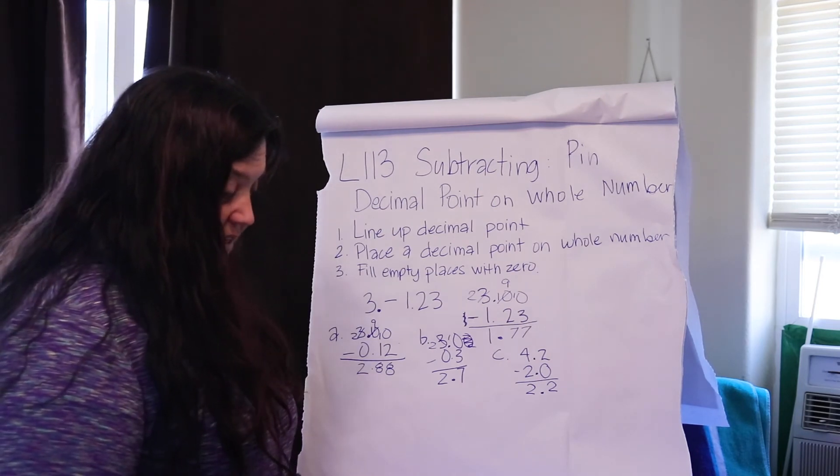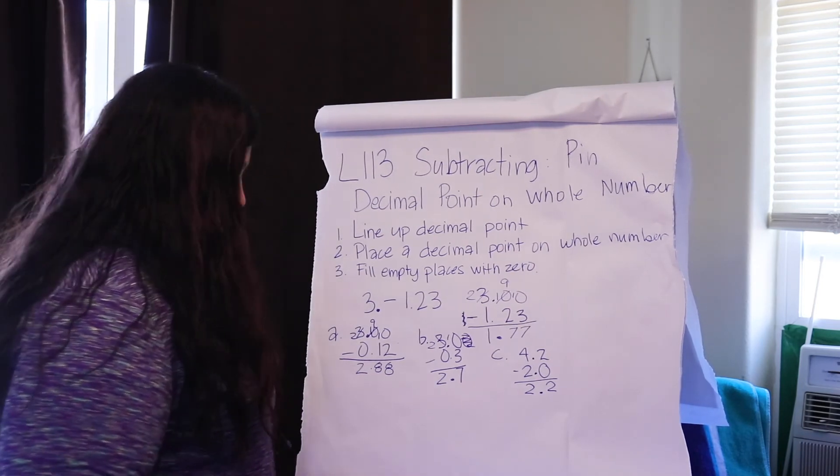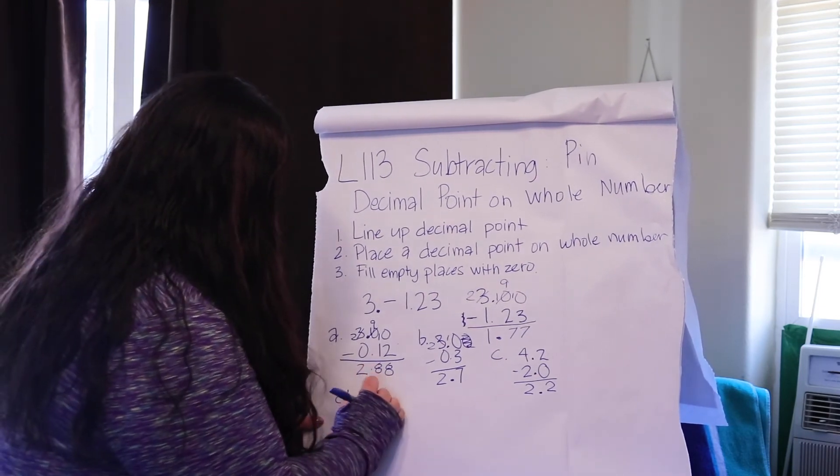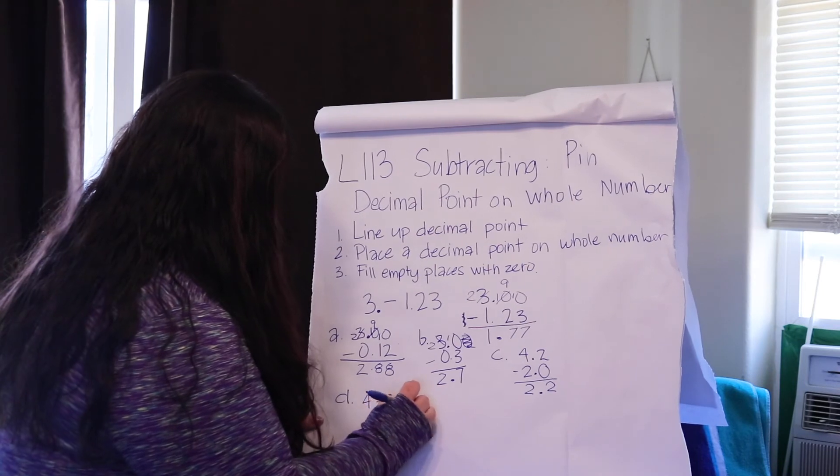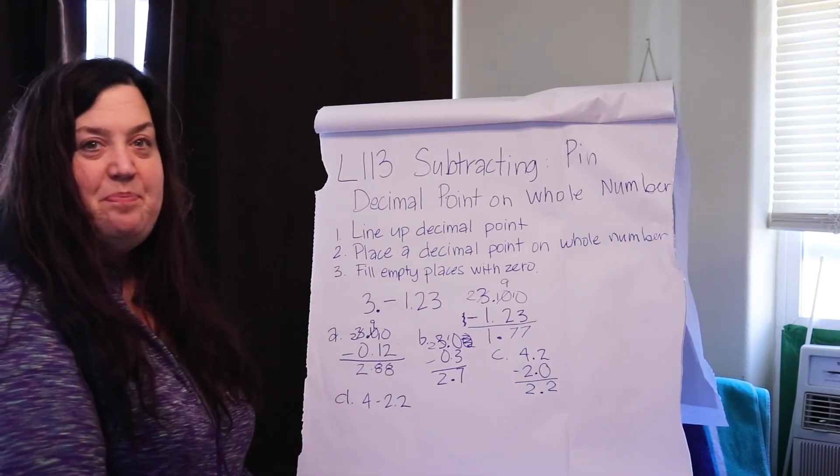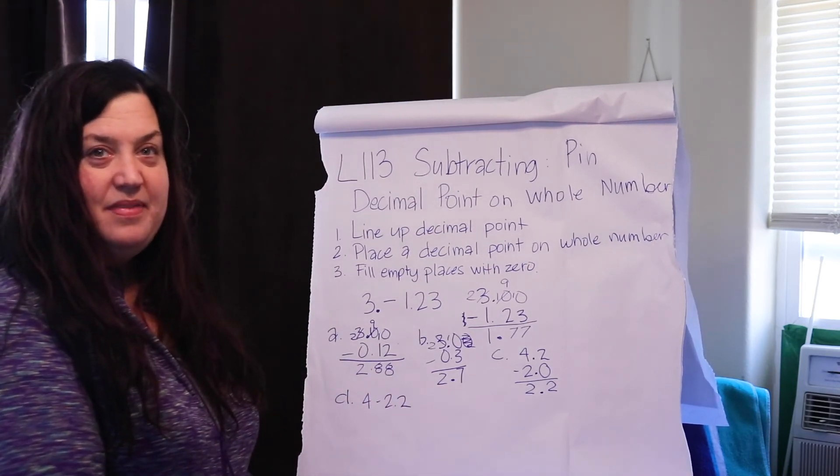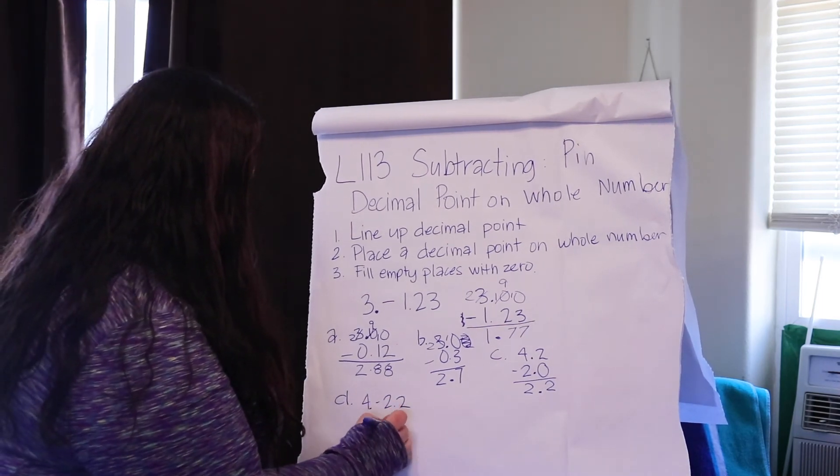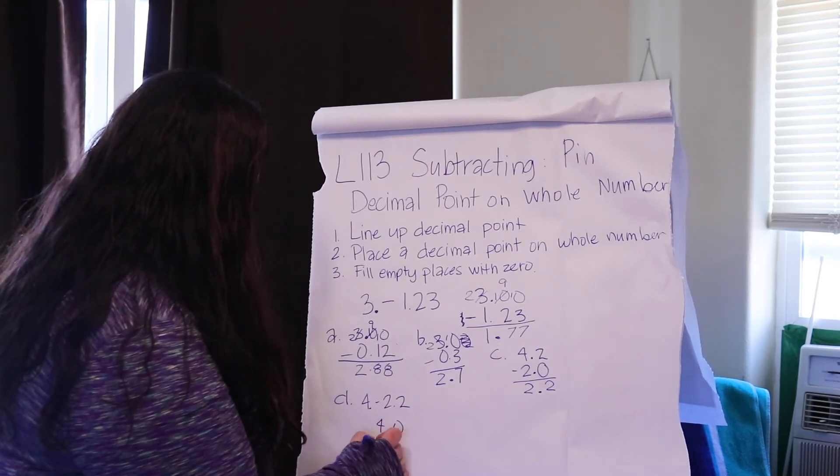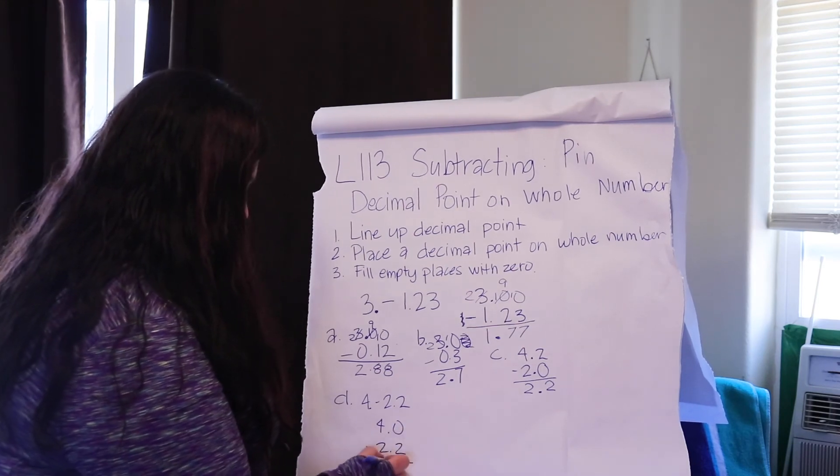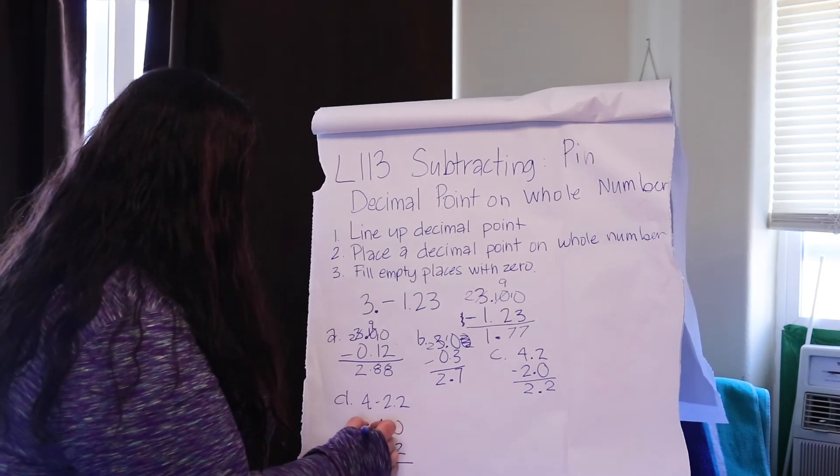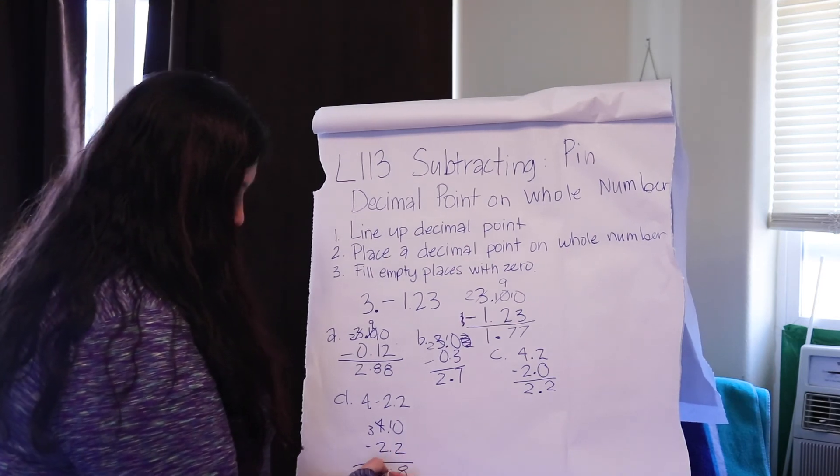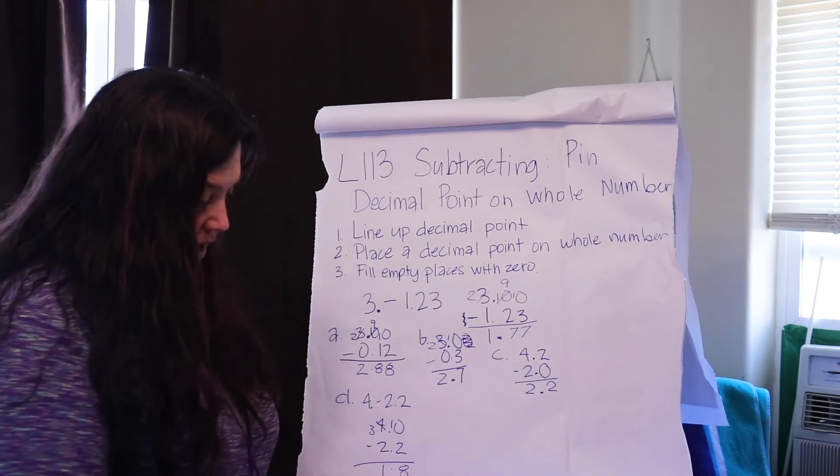Okay, I think you guys have it, but let's do one more together. Let's do D. Okay, so we have 4 minus 2.2. You go ahead and line that up now. Okay, how does it look? Did you put your decimal point here? Fill your place with the 0, now subtract. Uh-huh, 8 and 1. So we have 1 and 8 tenths.